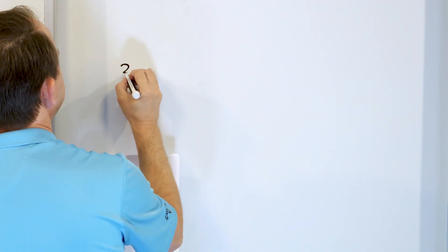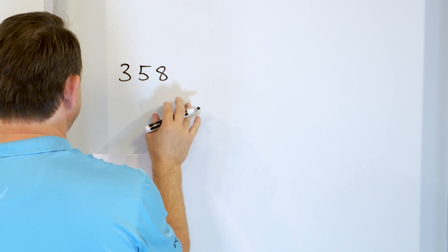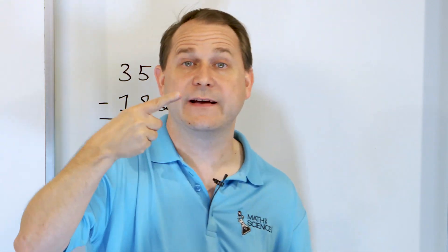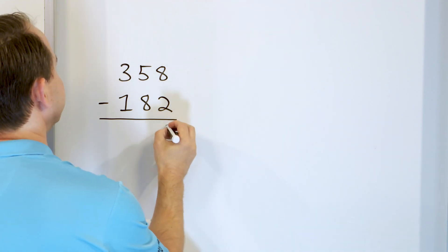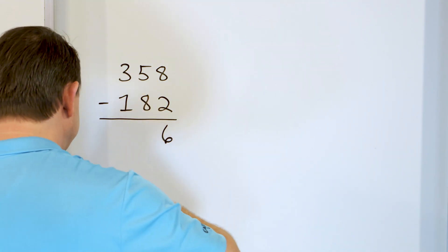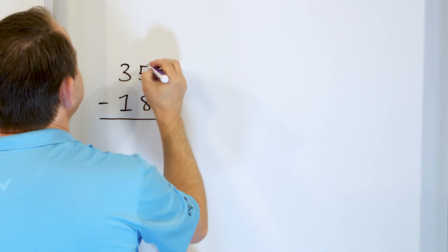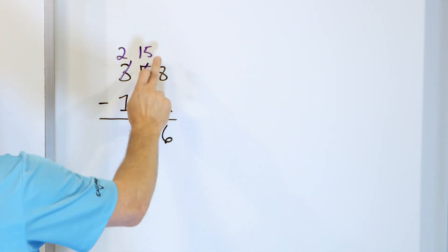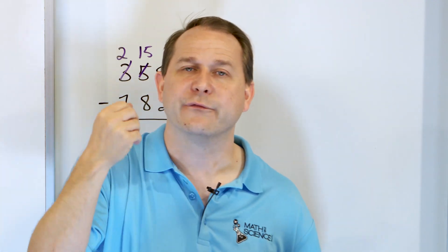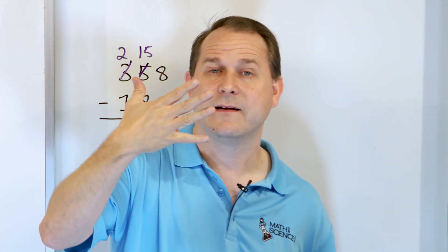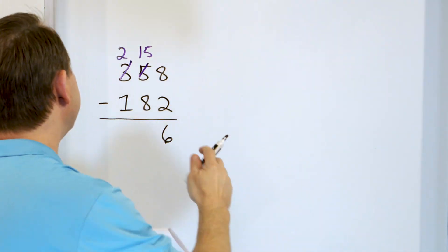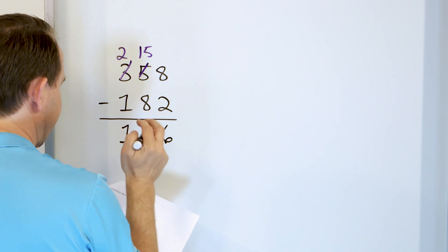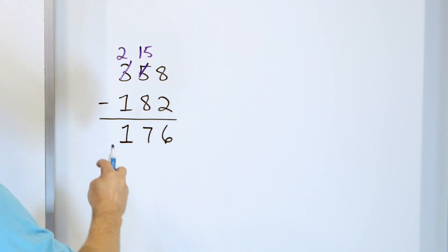What if we have 358 and we subtract from that 182? What is 8 minus 2? Start with 8, go down: 7, 6. So 8 minus 2 is 6, so we put a 6 here. Now 5 minus 8 — we can't do that because 5 is not big enough, so we make this 5 into a 15 by borrowing to make the hundreds digit a 2. So 15 minus 8: start with 15, go down: 14, 13, 12, 11, 10, 9, 8, 7. We landed on 7. Next, 2 minus 1 is 1. So we get an answer of 176.